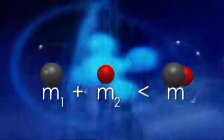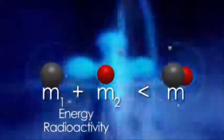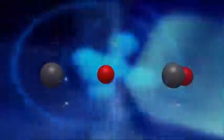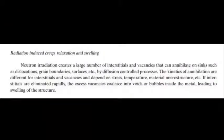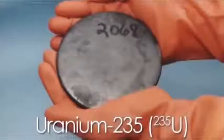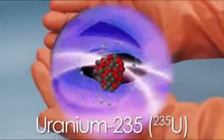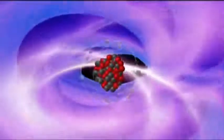Neutron irradiation creates a large number of interstitials and vacancies that can annihilate on sinks such as dislocations, grain boundaries, surfaces, etc., by a diffusion-controlled process. The kinetics of this annihilation are different for interstitials and vacancies and depend on stress, temperature, material microstructure, etc. If interstitials are eliminated rapidly, the excess vacancies coalesce into voids or bubbles inside the metal, which leads to swelling of the structure.